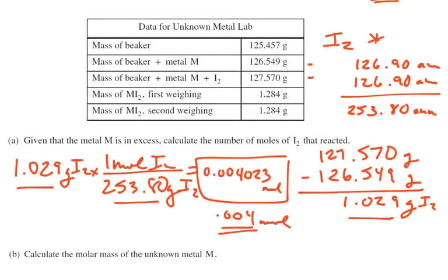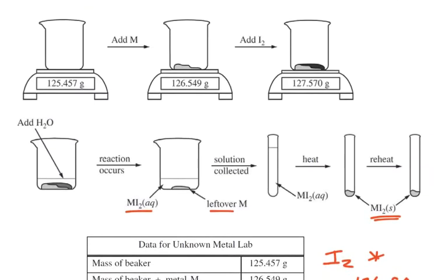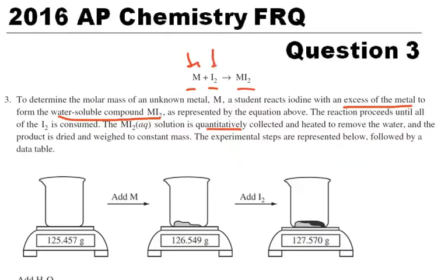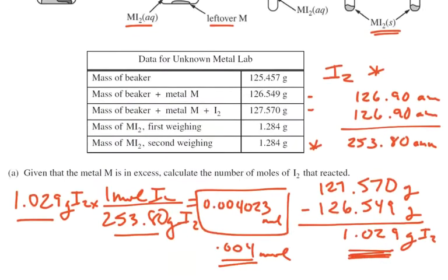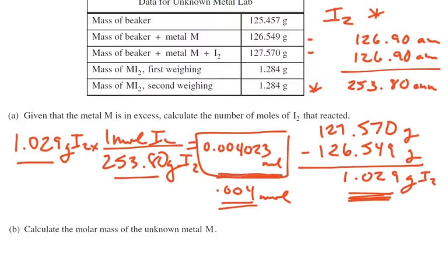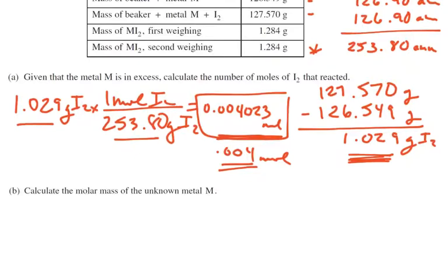Calculate the molar mass of the unknown metal. I think now we're going to go back and use this number. This is the MI2, the mass of that, and we know the mass of the I2, so we can figure out the mass of the M. The other clue that we need is because we're talking about the reaction way at the beginning - for every M, there's an I2. So if we know how many moles of I2 we have, then we also know how many moles of M that we have. This number here is going to do double duty - it's moles of I2 and it's moles of M.